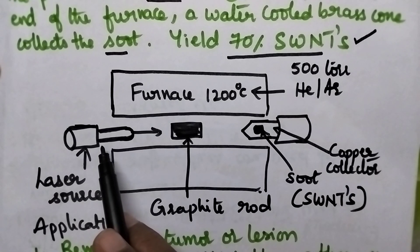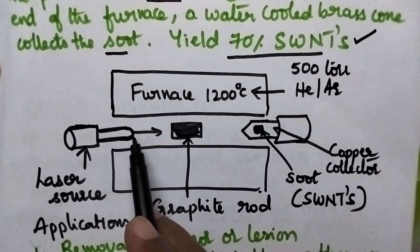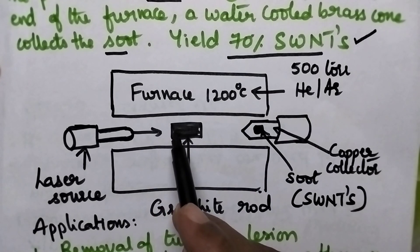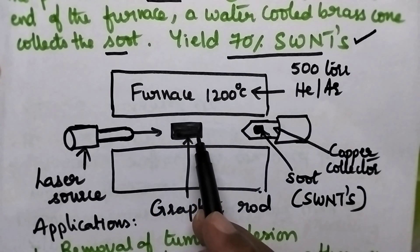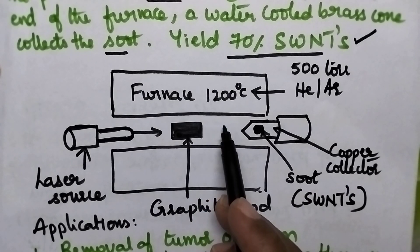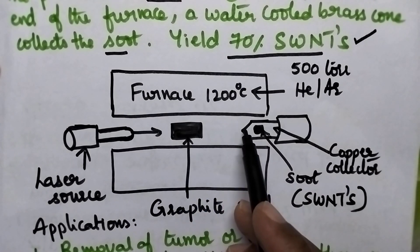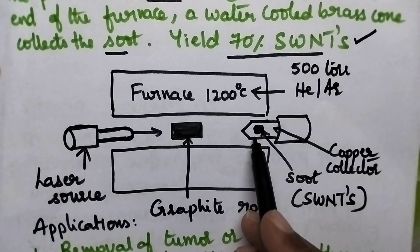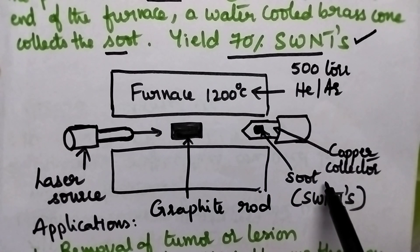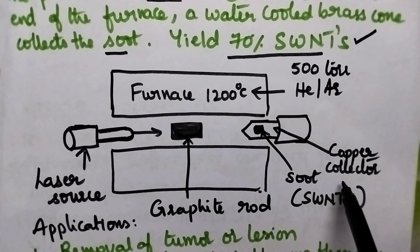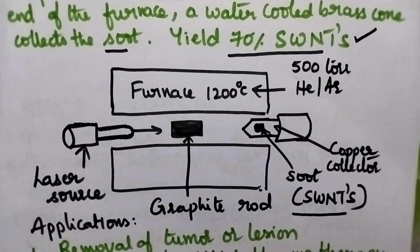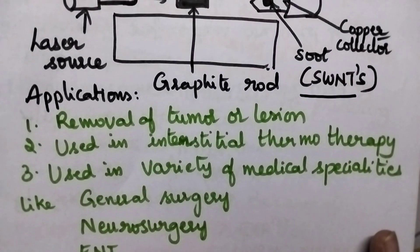With the help of the laser beam source, a pulsed laser bombards the graphite rod and ablates it. The carbon particles appear in the form of soot and get deposited on the copper collector. This deposit consists of both single-walled and multi-walled carbon nanotubes, with the major product being single-walled carbon nanotubes.